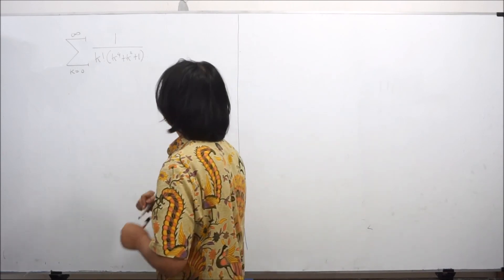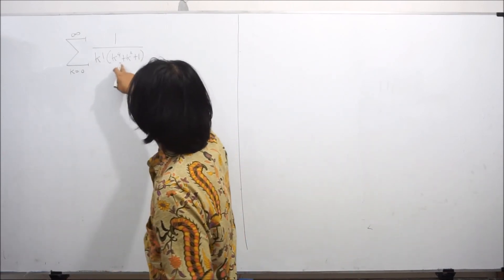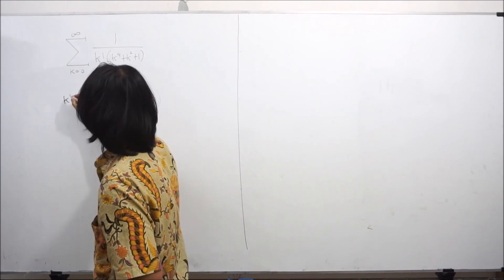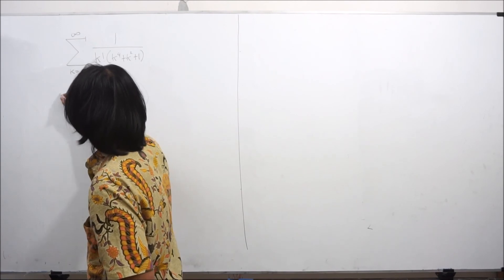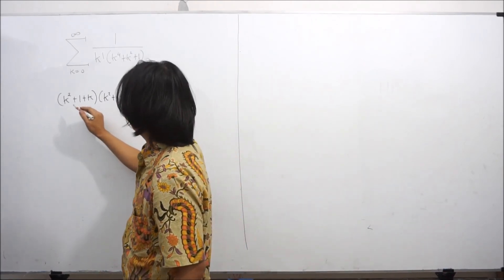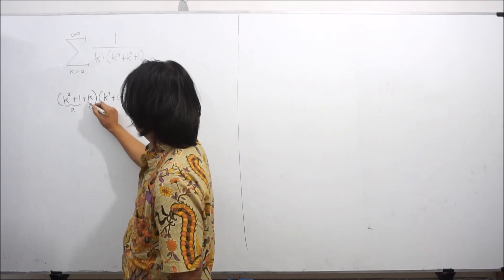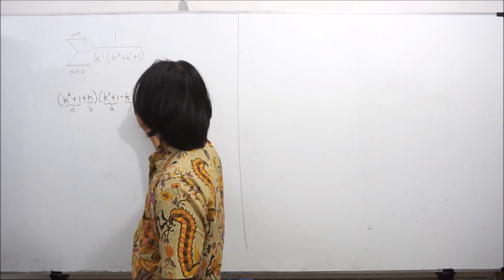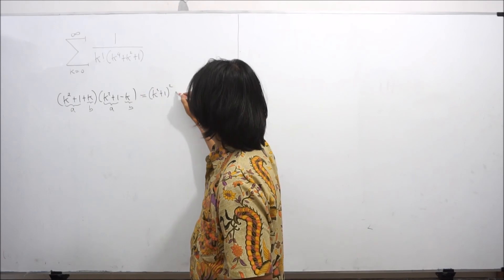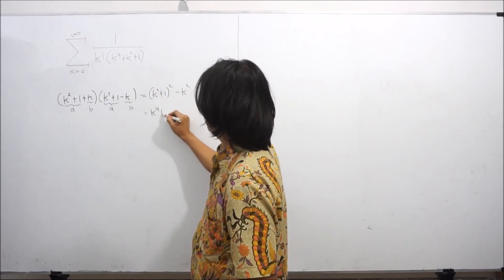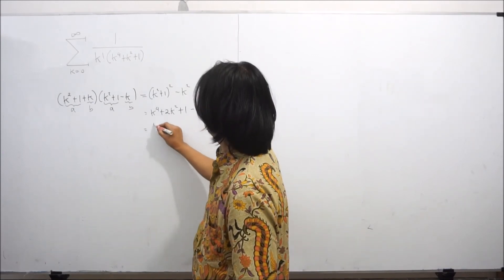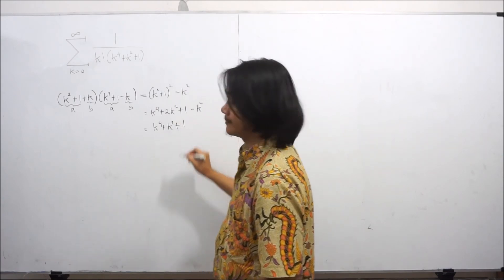Alright, so let's do this. First of all, we'd like to factor k to the 4th power plus k squared plus 1. I claim that this can be written as (k squared plus 1 plus k) times (k squared plus 1 minus k). This is an expression of the type (a plus b)(a minus b), so the result is a squared minus b squared. In this case we have (k squared plus 1) squared minus k squared, which equals k to the 4th plus 2k squared plus 1 minus k squared, which equals k to the 4th plus k squared plus 1.